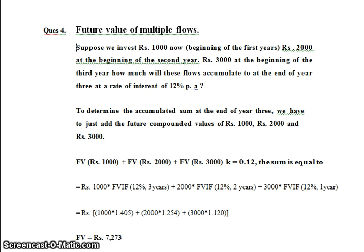This is the question. To determine the accumulated sum at the end of year 3, we have to add the future compounded value of Rs. 1000, Rs. 2000, and Rs. 3000. So, future value of Rs. 1000 plus future value of Rs. 2000 plus future value of Rs. 3000.